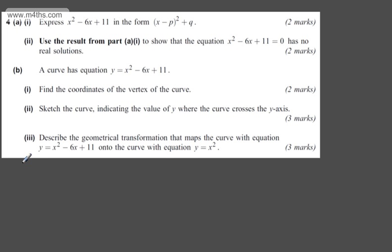All we're looking to do here is complete the square. So we'll have (x - 3), we square the bracket, we subtract away (-3)², and then add the 11.